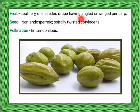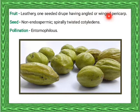Drupe type of fruit: developed from a syncarpous or monocarpellary ovary. Fruit may be differentiated into outer epicarp, middle mesocarp, and inner endocarp. The mesocarp portion is fleshy and endocarp is hard. Seeds non-endospermic; spirally or twisted cotyledon is present. Pollination is entomophilous, meaning pollination is due to insect agency.